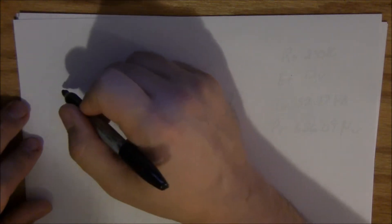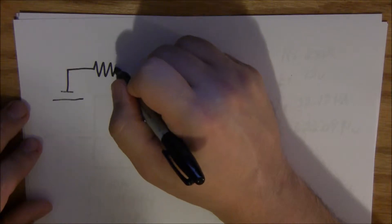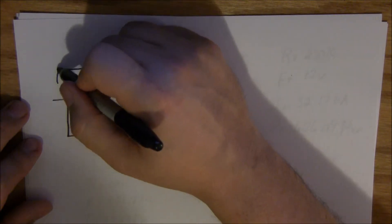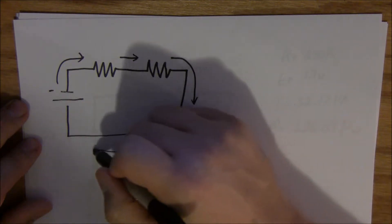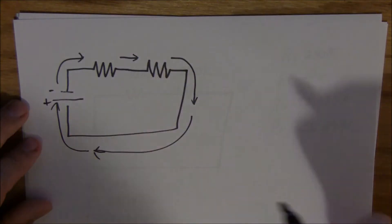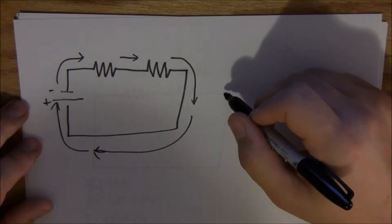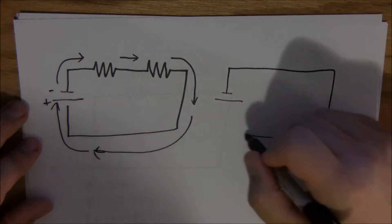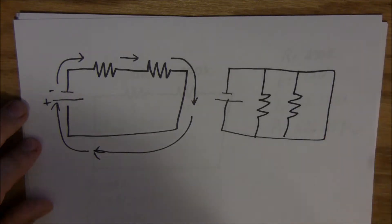First let me just explain the difference between series and parallel real quick — it'd be easier just to see it on paper. Resistors in series follow the flow of electrons, like so. Electrons coming out of the negative side of the battery or power source and right back to the positive side. Now parallel means just that — the resistors are parallel to each other. You still have the same power source or battery, a circuit that goes all the way around and back, and your resistors connect the two rails parallel to each other like that.